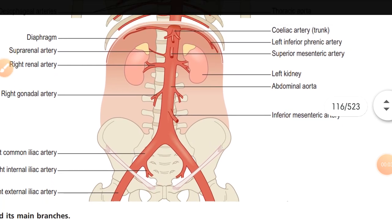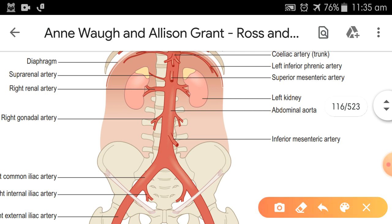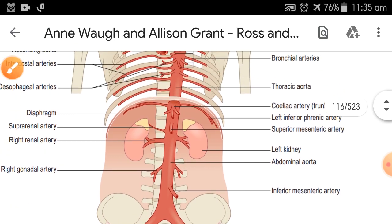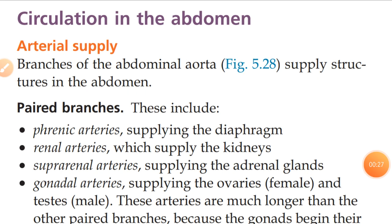Hello students, we are going to study about the circulation of the abdomen. Here is the abdominal aorta seen in the diagram. This is the thoracic aorta and this one is the abdominal aorta, which will provide blood supply to the abdominal area. We are going to study arterial supply and circulation in the abdomen. The first is the arterial supply — branches of the abdominal aorta supply the structures in the abdomen.